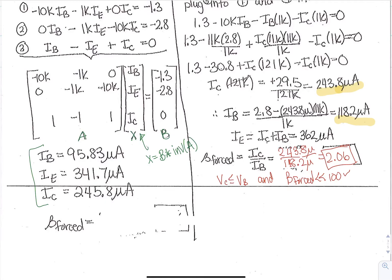And that will yield your values for IB, IE, and IC, which end up being these values. IB ends up being 95.83 micro, 341.7 micro, and 245.8 micro for IC. So plugging those values in, you get 245.8 micro divided by IB, which is 95.83, and that yields 2.56. Again, that is way less than the beta that was given of 100, and so we are in the saturation region.